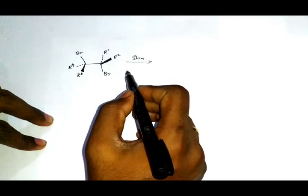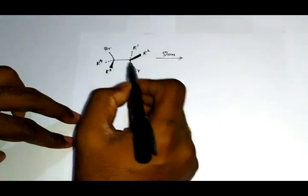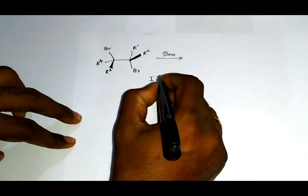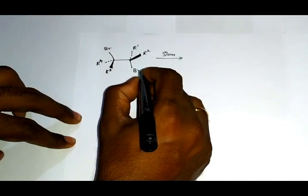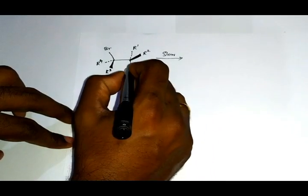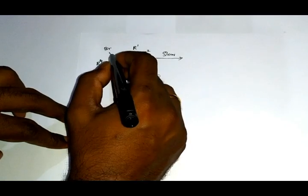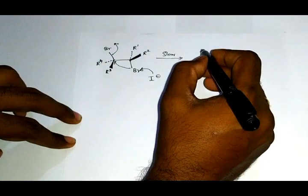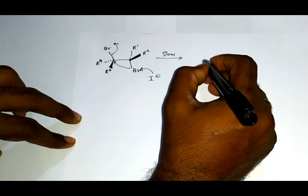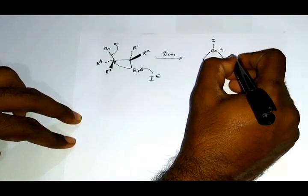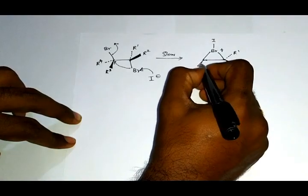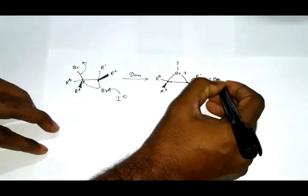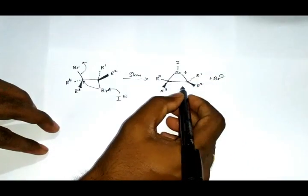Debromination using sodium iodide is formed by anti-elimination. Since these two bromines are anti to each other, the iodide ion can attack this bromine, which will fall here, and this bromine will leave, leading to the formation of this structure. This is a bridged intermediate.